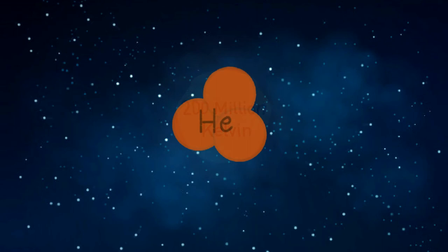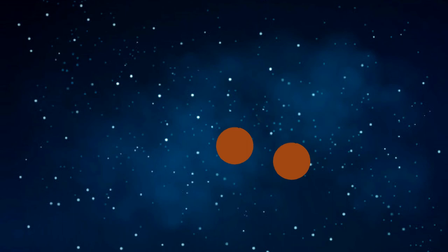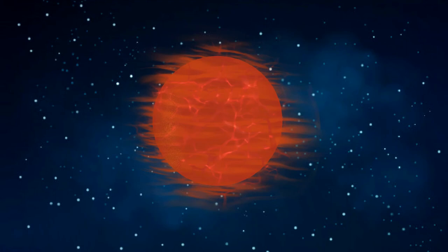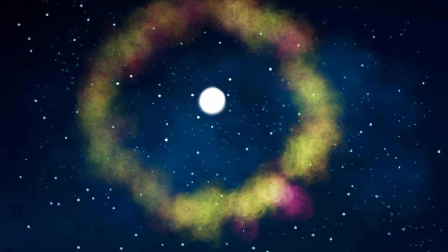However, the helium runs out quickly and the core collapses again. The pressure becomes so strong that the outer shell is blown away to form a ring around the core. This is the planetary nebula stage.